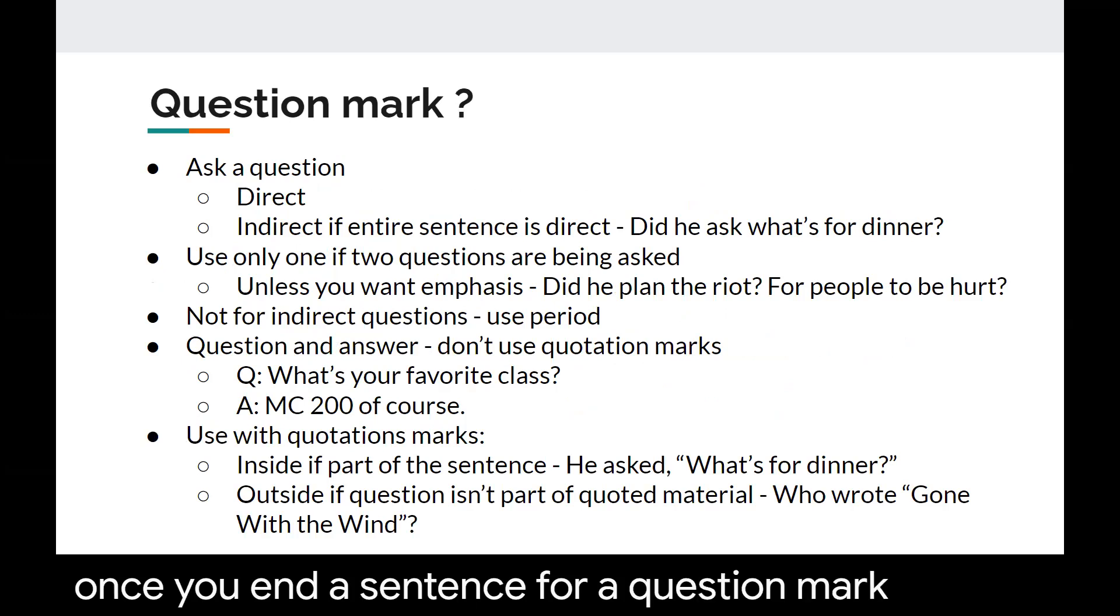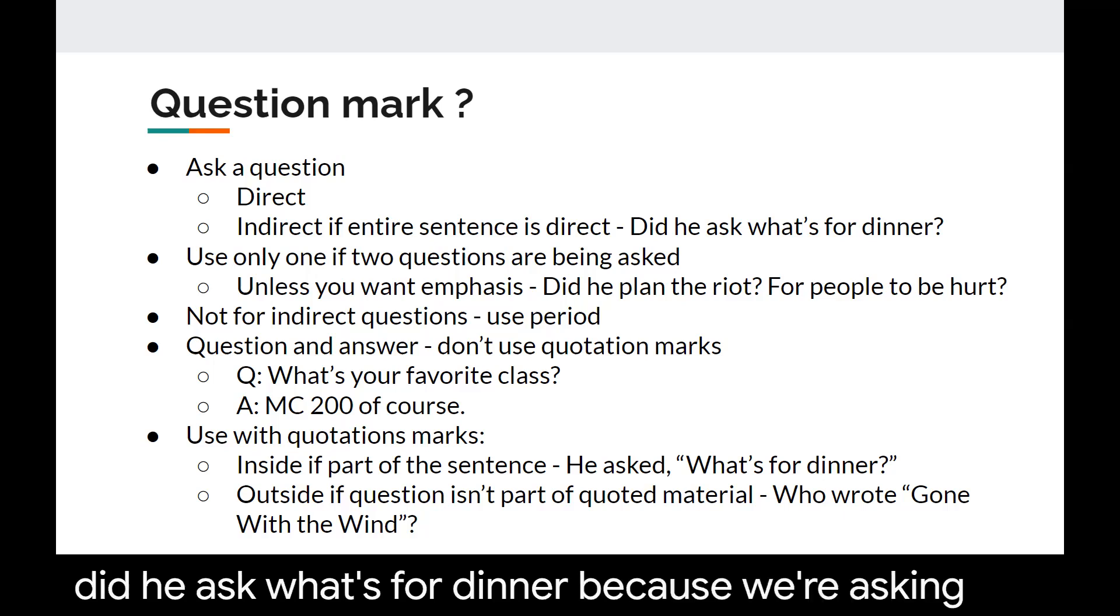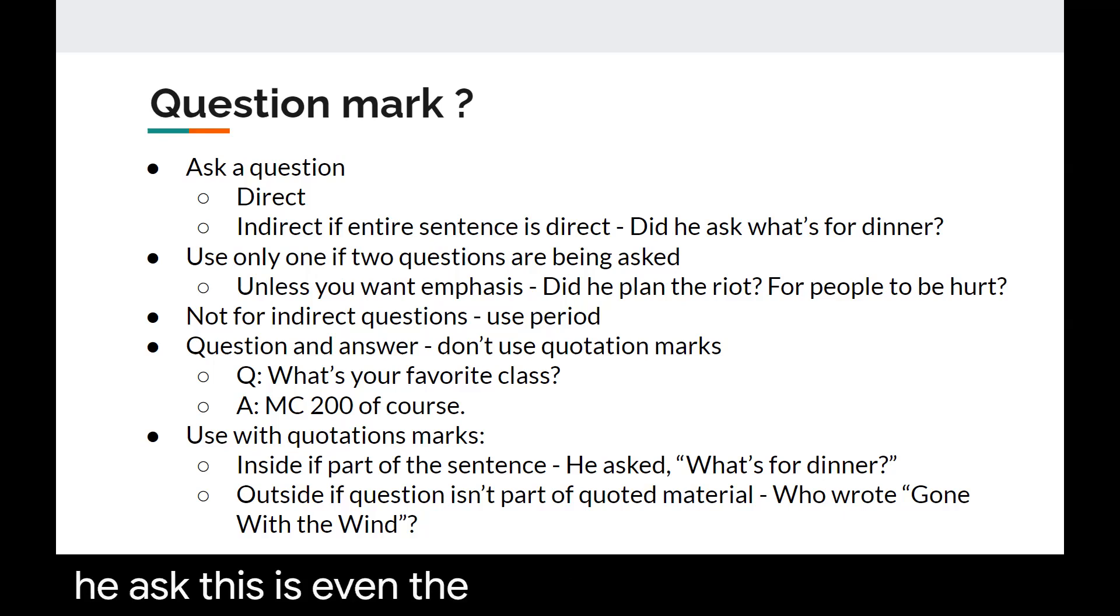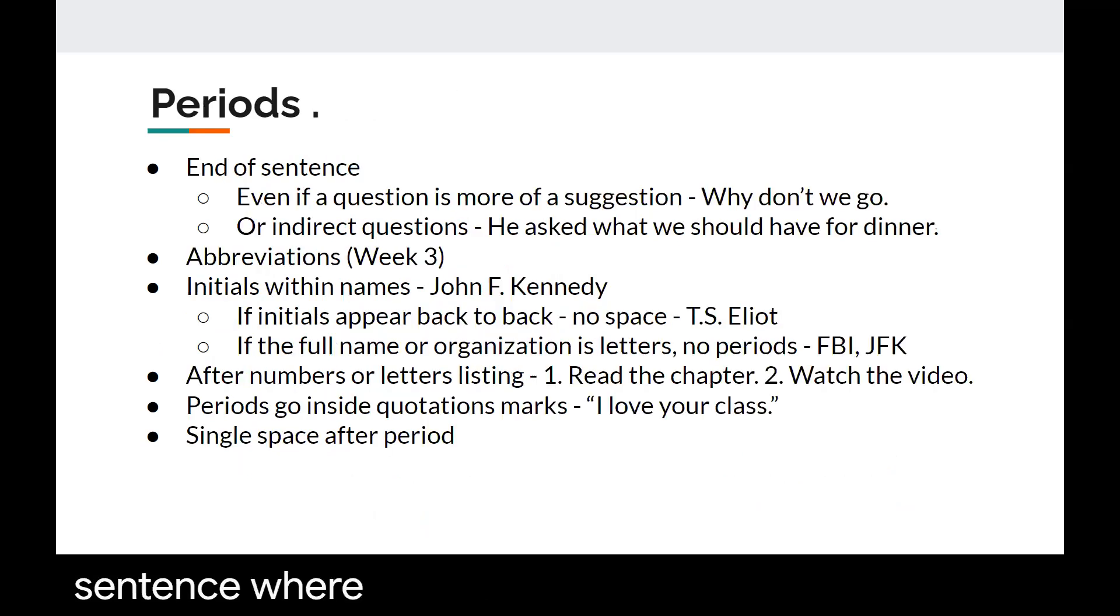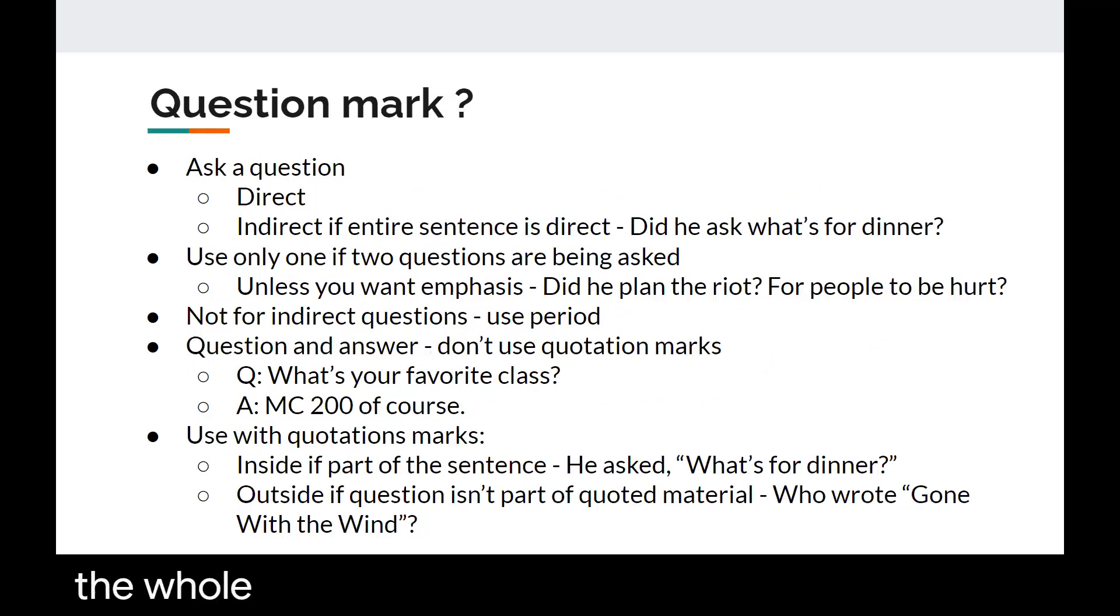For a question mark you're really asking a question and it needs to be a direct question. An indirect question if the entire sentence is still a direct question would use a question mark. So did he ask what's for dinner? Because we're asking did he ask this even the indirect question of what's for dinner is part of a larger direct question. Therefore we would use a question mark at the end of this sentence where as you may remember he asked what we should have for dinner uses a period because that indirect question is part of a statement as opposed to a direct question. So think about what the whole sentence is. Is it a direct question or is it a statement? And then use the appropriate punctuation.